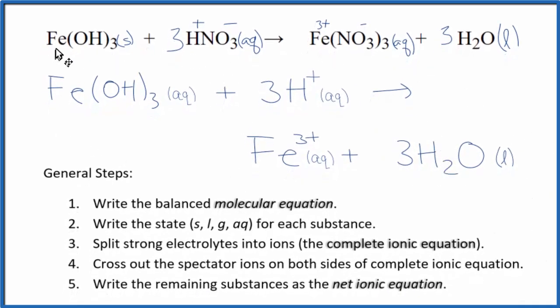So this is our net ionic equation for iron(III) hydroxide plus nitric acid. You'll notice that we have three times 1+, so we have 3+ for our charge on the reactants. And then in the products, we have 3+. So charge is conserved - it's the same on both sides. And if you count the atoms up, each type of atom, they'll be the same on both sides of the equation. So that's balanced as well.